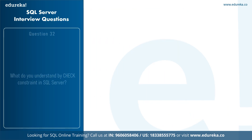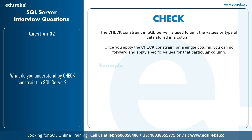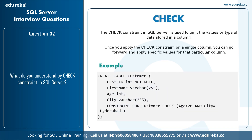The next question is: what do you understand by check constraint in SQL Server? The check constraint is used to limit the values or type of data stored in a column. For example: creating a table 'customers' with columns customerID, firstName, age, and city, then applying a constraint named 'check_customer' with the condition that age is greater than 20 and city is 'Hyderabad'.